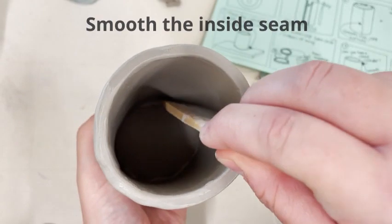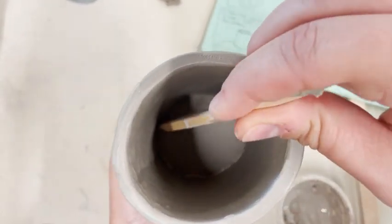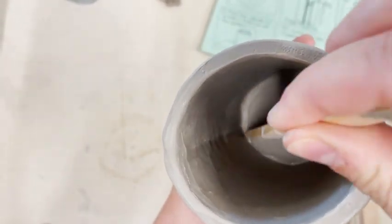Then if you can, try to get into that inside seam and just give it a little bit of a smooth. So that if there's any sort of crack, you're just putting any extra slip or anything like that inside there and smoothing it. And that's it. Look at the back for how to make handles.